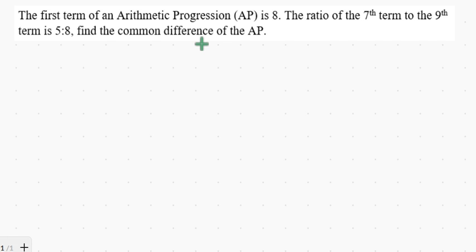Let's solve this question on sequence and series, specifically on arithmetic progression. The first term of an arithmetic progression AP is 8. The ratio of the 7th term to the 9th term is 5 to 8. Find the common difference of the AP.